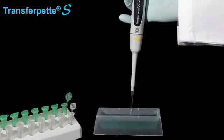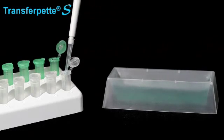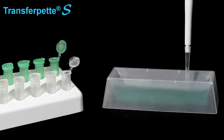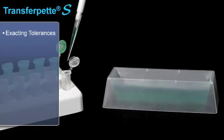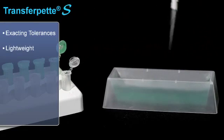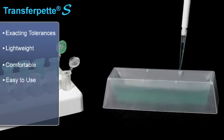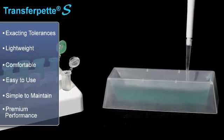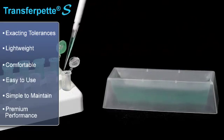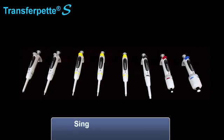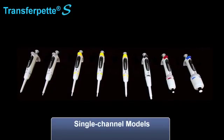The Transferpette S incorporates advanced materials and innovative design features. Manufactured in Germany to exacting tolerances, it's lightweight, comfortable, easy to use, simple to maintain, and delivers premium performance. It's also fully autoclavable and available in single channel models.